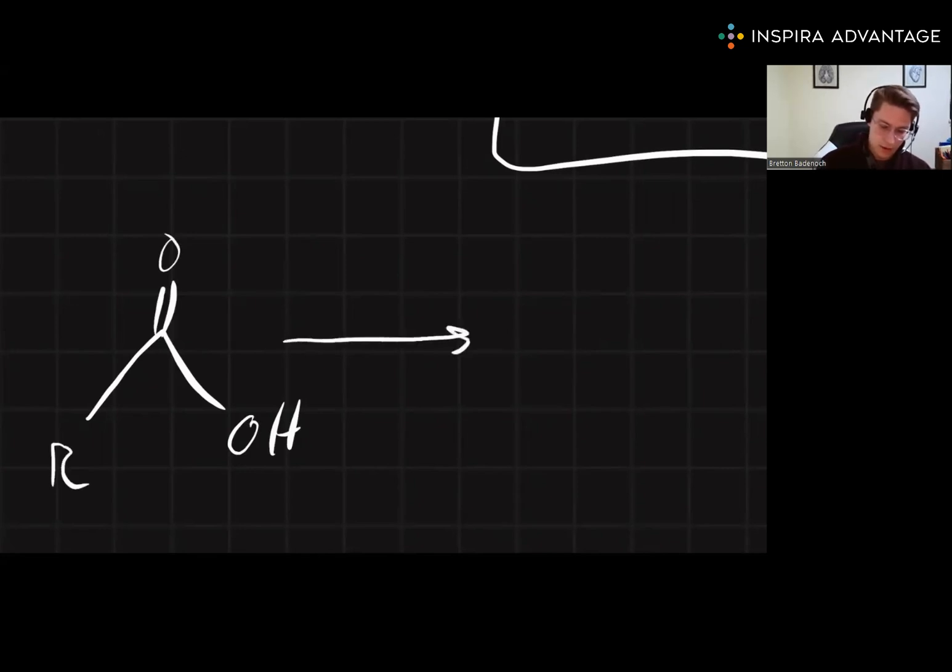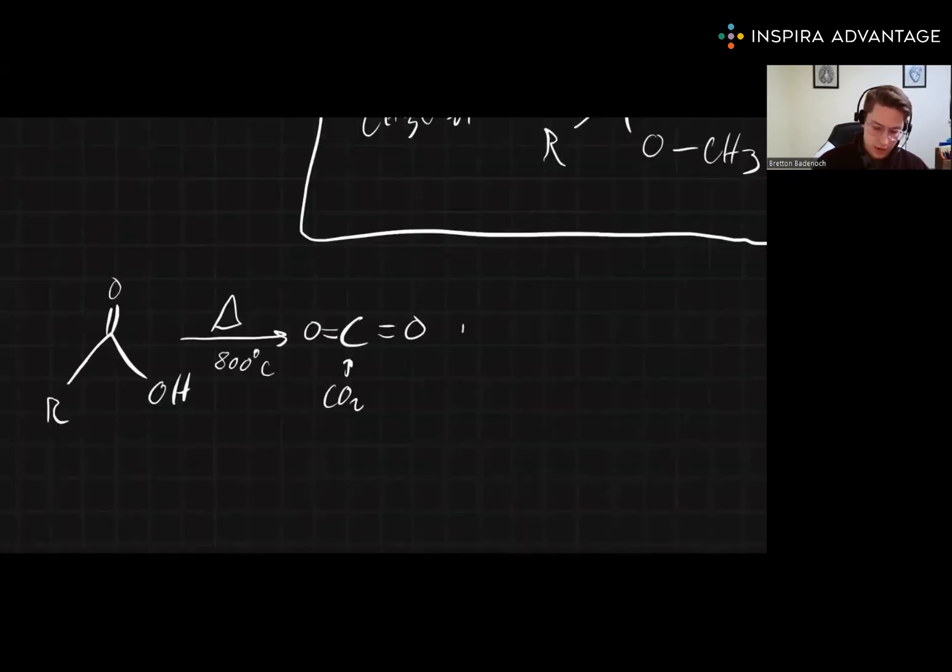This means that under high heat, which I'll symbolize by a triangle, or I'll write 800 degrees Celsius. We're going to remove a CO2 group. Okay, well, we've got carbon. Here's one oxygen. Here's another CO2. And then we're going to keep whatever's left. So we're going to have that R group and an H. So we have completely gotten rid of this. This is gone. All we've got left is an H. Crazy. All it took was some heat, and this has gone up as a gas.